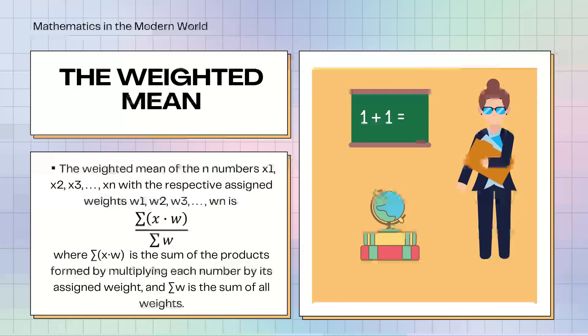The weighted mean. The weighted mean of the n numbers x sub 1 to x sub n with the respective assigned weights is the summation of x times w over the summation of w, where the summation of x times w is the sum of the products formed by multiplying each number by its assigned weight, and the summation of w is the sum of all weights.